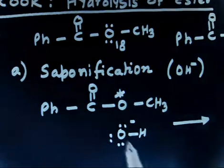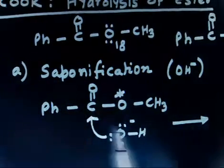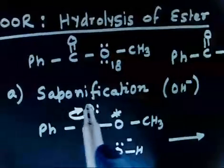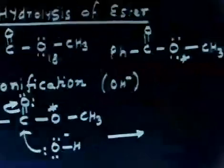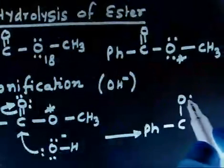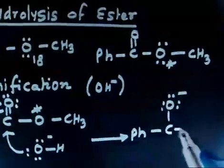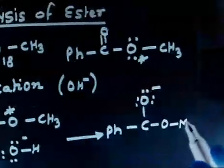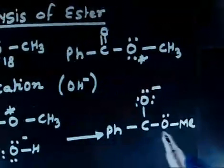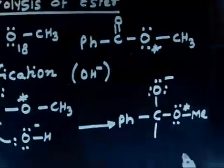This lone pair on OH⁻ can attack — it acts as a nucleophile and attacks the carbonyl carbon. There are two lone pairs initially. So I will have a tetrahedral intermediate: PhC with a negative charge, showing the lone pairs, and on this side I have O*CH₃ — that labeled oxygen — and here I have OH.